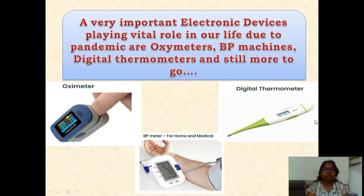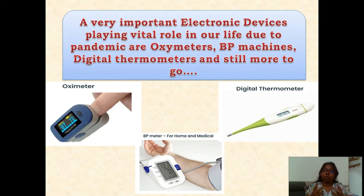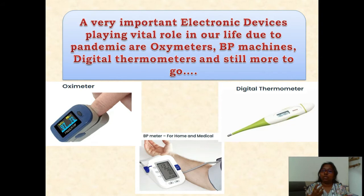Oxymeters, digital thermometers, and BP meters all have a digital reading. That digital reading is possible because electronic devices have been introduced inside those equipments, where there is a conversion from analog signal to a digital signal. These devices use sensors — electronic devices inside — where we can measure the oxygen level in our body. They are non-invasive, meaning before, to measure oxygen saturation, they had to use a needle or prick the body. Electronics has brought such modifications that most devices are now non-invasive — you need not prick into the body.